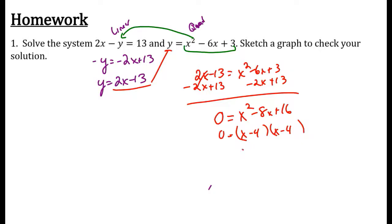Using the zero product property, you get x equals 4 and x equals 4. So there's only one point of intersection. That point has an x value of 4. How do you get the y value? Well, you plug it back in. So y equals 2 times 4 minus 13. That gives me negative 5.